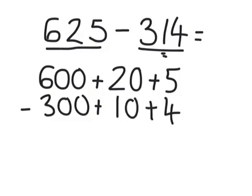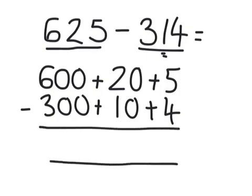Next, we have to subtract the 314 away from the 625. So, 5 take away 4 is 1. 20 take away 10 is 10.